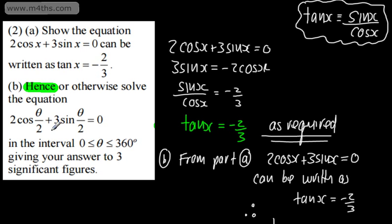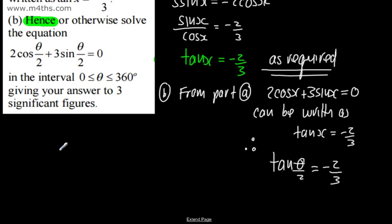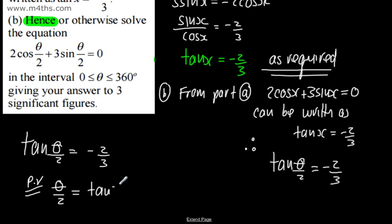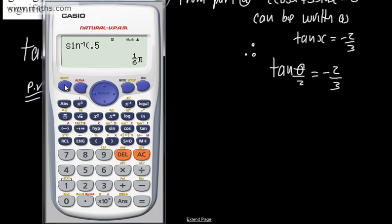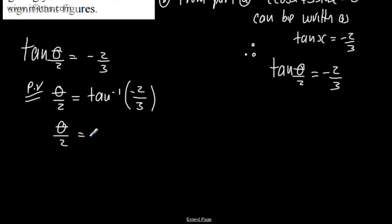This is exactly the same equation as part A, with x replaced by θ/2. Principal value: θ/2 = arctan(-2/3). In degrees mode (shift mode 3), inverse tan of -2/3 gives a principal value of -33.69...°. So θ/2 = -33.69...°